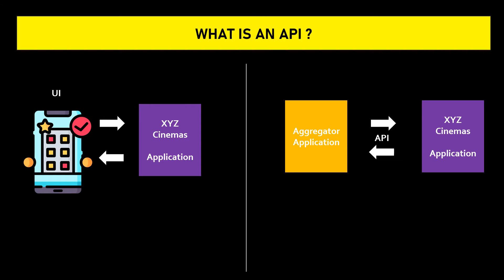You are interacting with the XYZ Cinemas application using the screen, which is the user interface. But let's say someone is very keen on watching the movie and doesn't have a preferred cinema — they're just looking for the nearest option. They would use a movie ticket booking aggregator website. The aggregator website interacts with individual cinema applications, and XYZ Cinemas is one of them. The aggregator uses an Application Programming Interface, or API, to communicate with XYZ Cinemas and get the requested show timings. In simple terms, an API is used for communication between two applications.